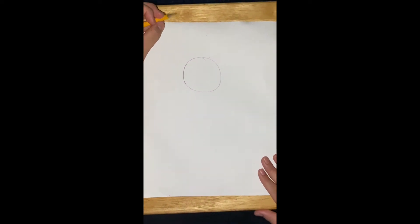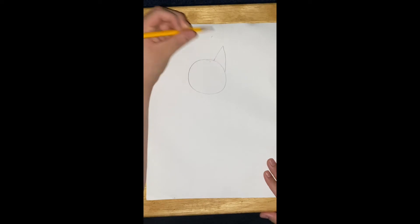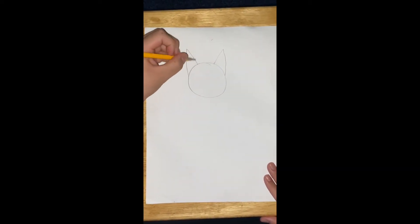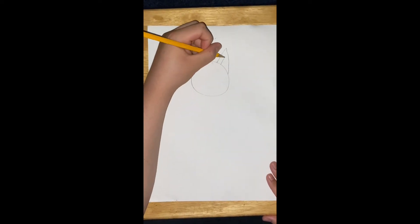Next, you want to draw the ears. So to draw the ears, you need to draw two big triangles on each side, right on the right side, and then one on the left side. And then you draw smaller triangles inside the ears, like so.